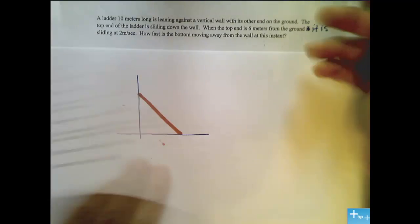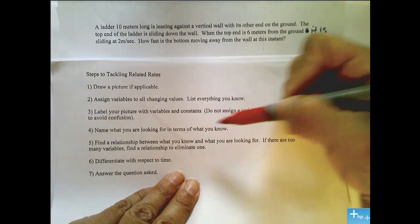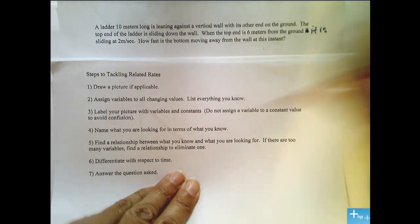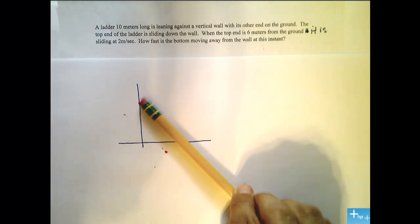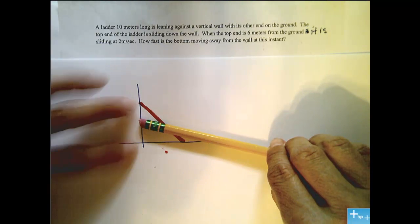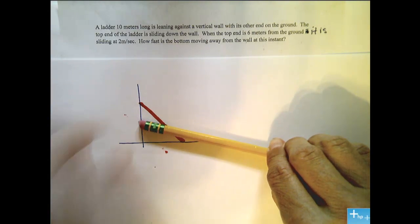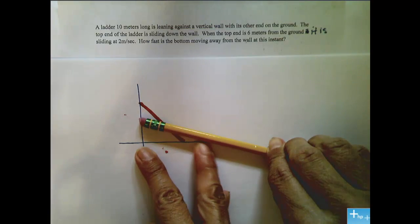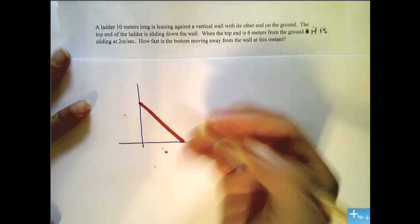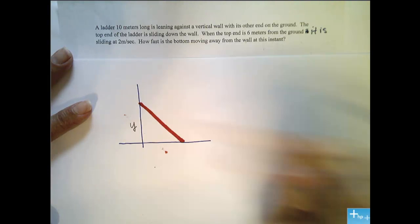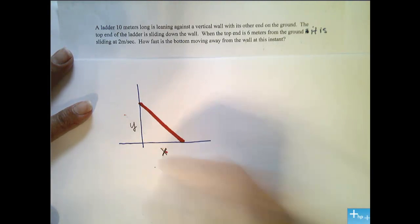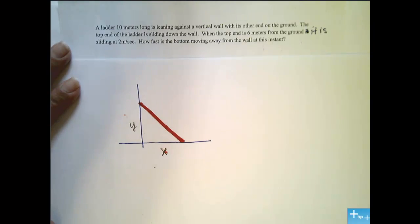Now, assign, so remember step 2, assign variables to all changing values. So let's see what's changing. If my ladder is sliding down the wall, then this distance is getting smaller, and this distance is getting bigger. So let's assign variables to those two changing distances. We'll call this one y, and this one x.